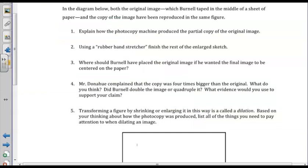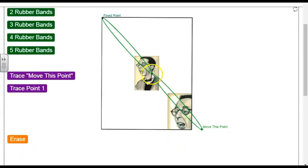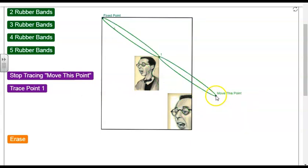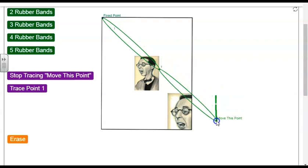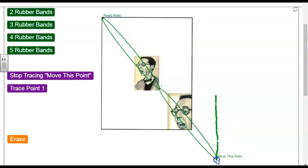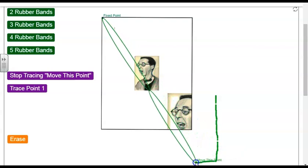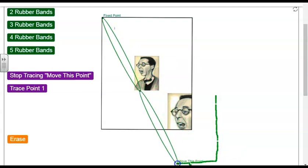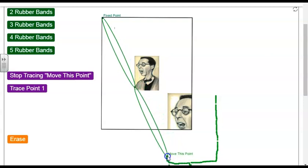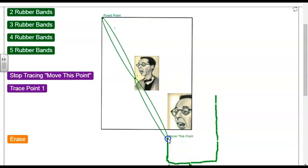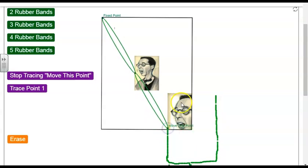Number two says, using a rubber band stretcher, finish the rest of the enlarged sketch. So we can use technology or we can use the hands-on rubber bands. I'm going to go back to my technology. And so what I'm going to do is I'm going to watch, just like I did with the heart, I'm going to watch this point. I'm going to trace starting with this point. So I'm first going to trace just the outline of the portrait so that I have a rectangle. And remember, this is a sketch. I am using my keyboard. So it's not as easy to use as the piece of paper that we have in class.